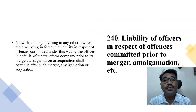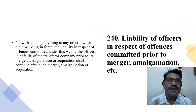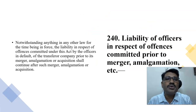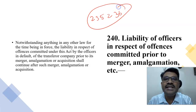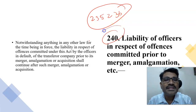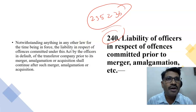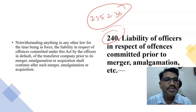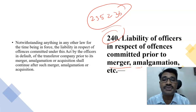From Section 234 to 240: Sections 235 and 236 deal with dissenting shareholders and will be discussed elaborately in another class. Section 240 talks about the liability of officers in respect of offenses committed prior to the merger or amalgamations. Notwithstanding anything in any other law for the time being in force, the liability in respect of offenses committed under this Act by the officers in default of the transferor company prior to its merger, amalgamation, or acquisition shall continue after such merger, amalgamation, or acquisition.